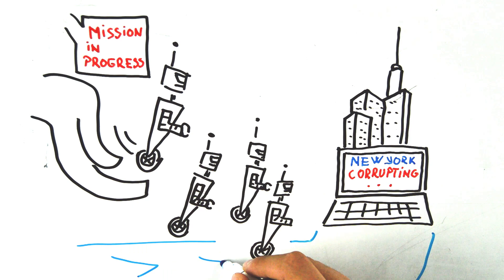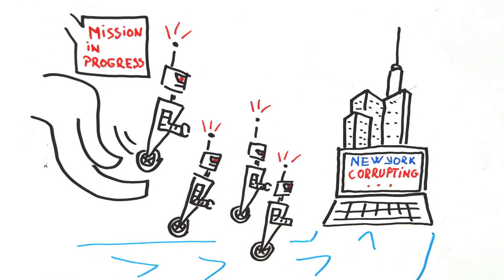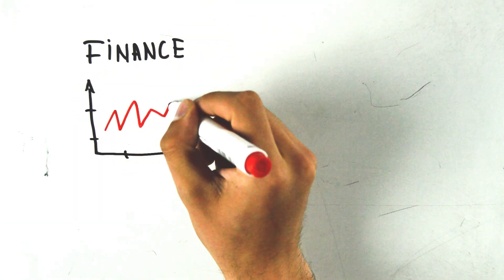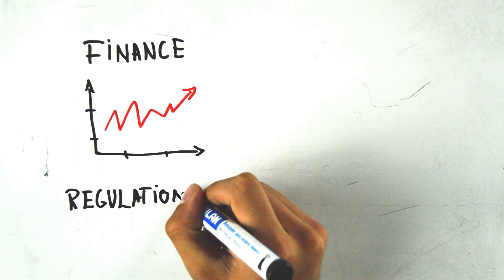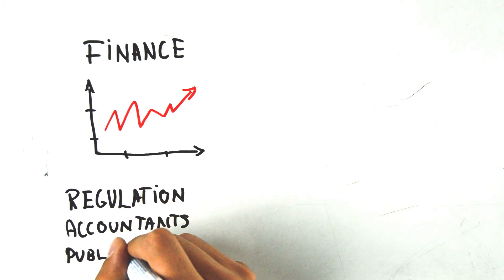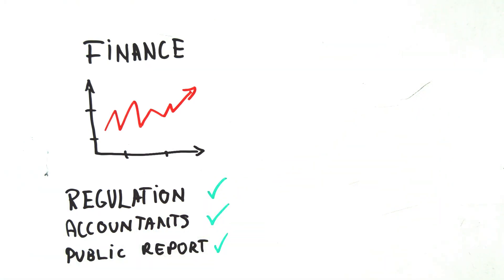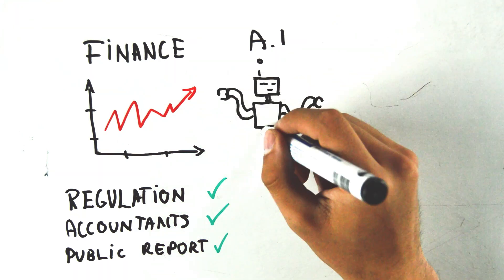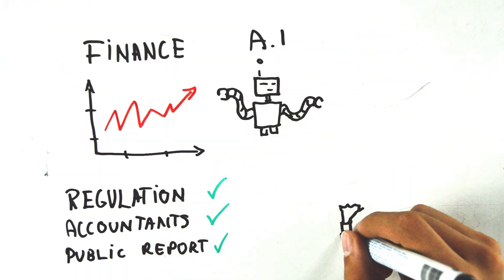In finance, small and big companies alike are strictly regulated, checked by independent accountants and they have to publish public financial statements. You might wonder, who checks if anything goes wrong with artificial intelligence? The answer is, nobody.